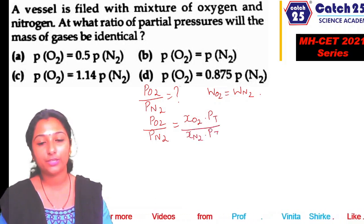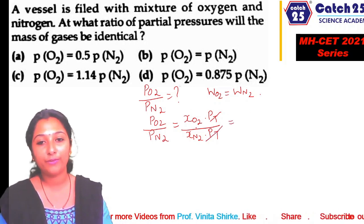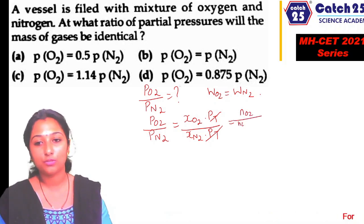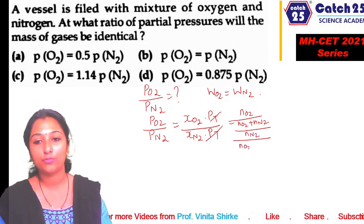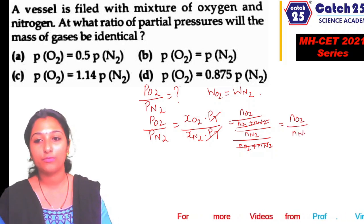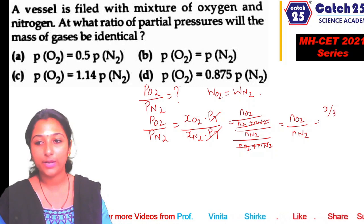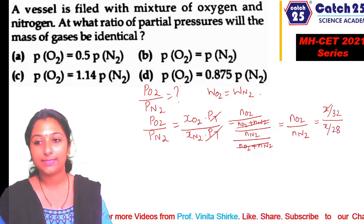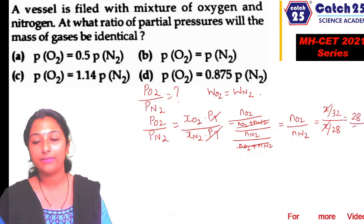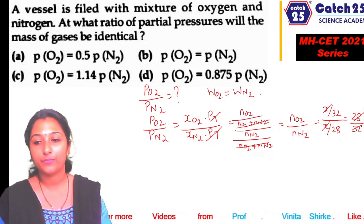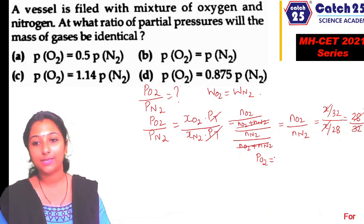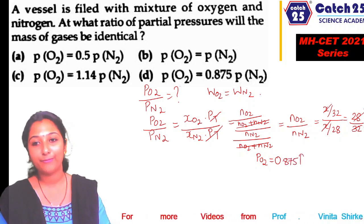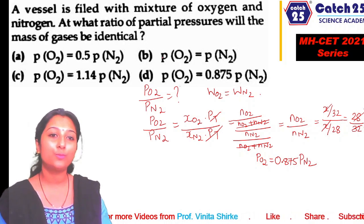Since total pressure is constant, the ratio of partial pressures equals the ratio of mole fractions, which equals moles of O2 / moles of N2. Since mass is the same (call it x): moles of O2 = x/32 and moles of N2 = x/28. x cancels, giving ratio = 28/32 = 7/8 = 0.875. So the answer is P(O2)/P(N2) = 7:8.